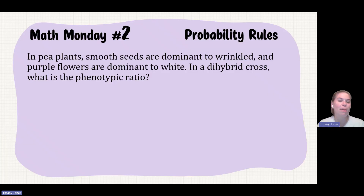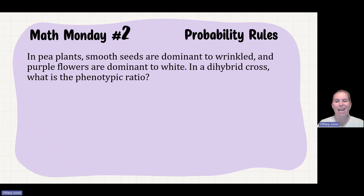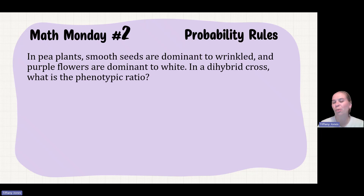In a pea plant, smooth seeds are dominant to wrinkled, and purple flowers are dominant to white. In a dihybrid cross, what is the phenotypic ratio? First thing, what is a dihybrid cross? A dihybrid cross means two parents that are heterozygous for two different traits — heterozygous for smooth as well as heterozygous for purple.